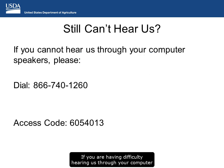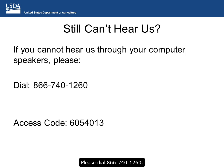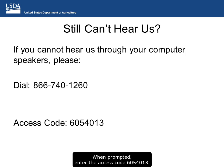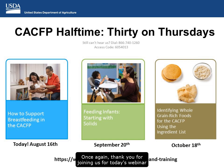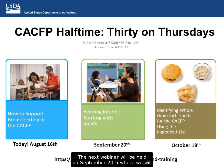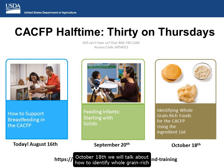If you are having difficulty hearing us through your computer speakers, you can call in by phone. Please dial 866-740-1260. When prompted, enter the access code 605-4013. The next webinar will be held on September 20th where we will discuss feeding infants starting with solids, and on October 18th we will talk about how to identify whole grain-rich foods for the CACFP using the ingredient list.